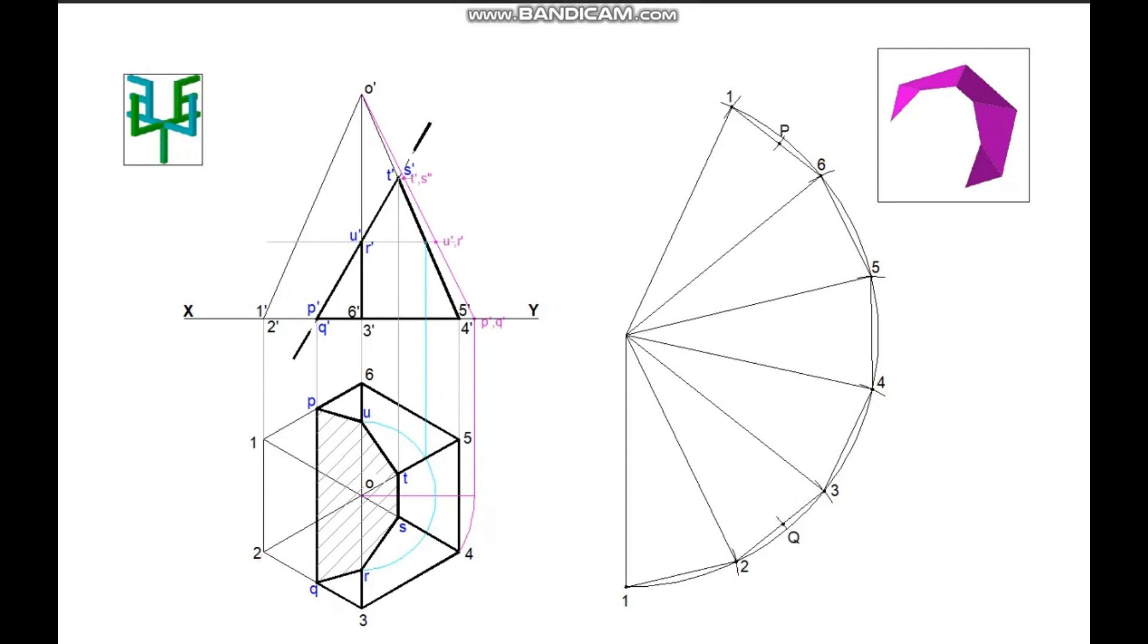For transferring the points on the slant edges from the elevation, measure the distance of O'T'. Distance of O' to T' and O' to S' are same. Mark it on the longer edges 5 and 4. Measure the distance of O'U'. Mark it on the longer edges 6 and 3. Darken the required portion of the development.